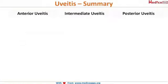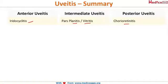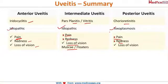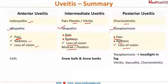In revision: anterior uveitis is iritis or iridocyclitis, intermediate is pars planitis or vitritis, and posterior is chorioretinitis. The most common cause of anterior and intermediate uveitis is idiopathic, while for posterior uveitis it is toxoplasmosis. Anterior uveitis presents with pain, redness, and loss of vision, whereas intermediate and posterior uveitis present with floaters and loss of vision only — no pain or redness.